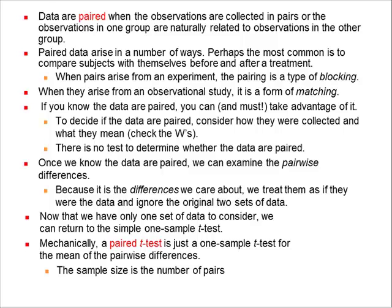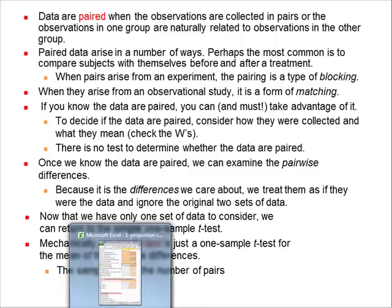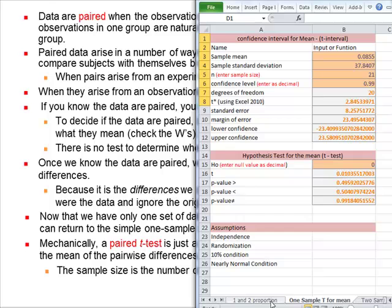Once we know the data are paired, we can examine the pairwise differences, because it's the differences we care about. We treat them as if they were data. Ignore the original set. So you take your sets of data, like your before and after sets of data, and you actually calculate the difference. And then you just have one set of data, which is the differences. And now we only have one set of data to consider. We can return to the simple one-sample t-test. Mechanically, a paired t-test is just a one-sample t-test for the mean of pairwise differences. The sample size is the number of pairs. So in your Excel spreadsheet on these, you're just going to go back to the one-sample t for the mean in order to make these calculations.